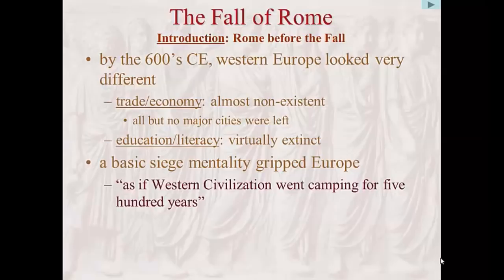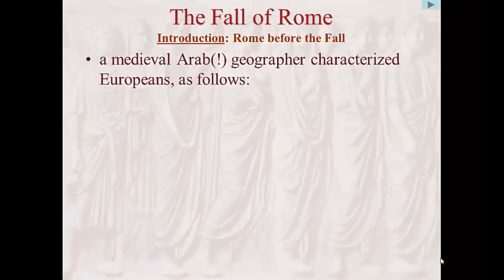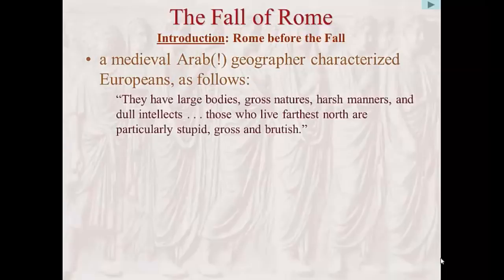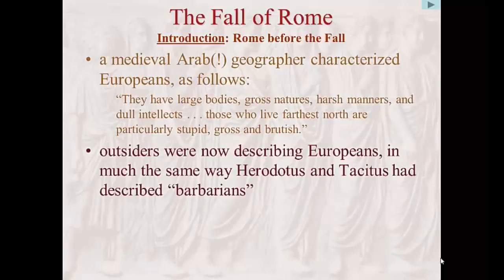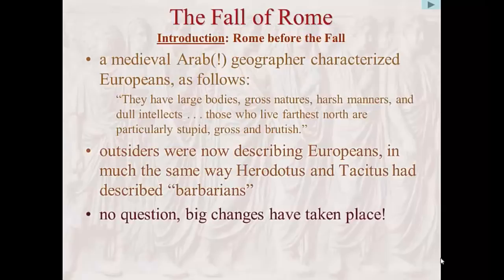There is no better way to bring home the impact of this grim reality than to look at Europe in the early Middle Ages through a foreigner's eyes. An Arab geographer of the day describes Europeans as having large bodies, gross natures, harsh manners, and dull intellects. Those who live farthest north are particularly stupid, gross, and brutish. The tables have certainly turned when outsiders are describing Western civilization the way classical historians like Herodotus and Tacitus had once appraised the barbarian world. This sequence of events, so precipitous a drop in quality of life, is where we must begin as we seek the reasons for why Rome fell.